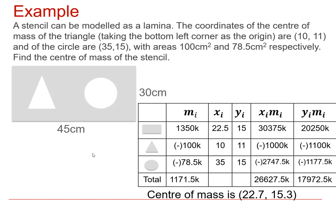And then to work out the centre of mass, usual calculation then, so for example, that x-coordinate, we take this value here, 26,627.5K, dividing it by the total mass, 1,171.5K. K's cancel, and that x-coordinate is approximately 22.7.